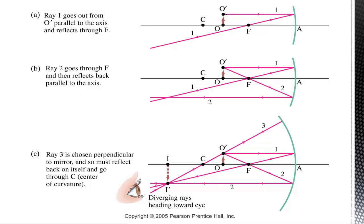If we have a ray coming off straight parallel to the principal axis, we already know where it's going — all parallel rays go through the focus. So we draw a ray that's parallel, then bounce it off through the focus and keep extending it. Now, if this ray of light were going the other way, it would go through the focus and after bouncing come out parallel. So we can draw a ray from our object that goes through the focus, and we know after bouncing it comes out parallel.